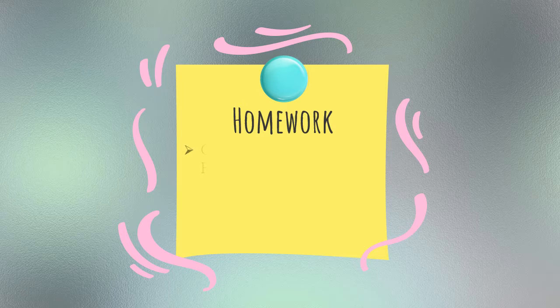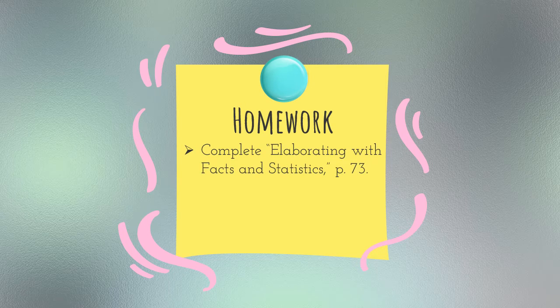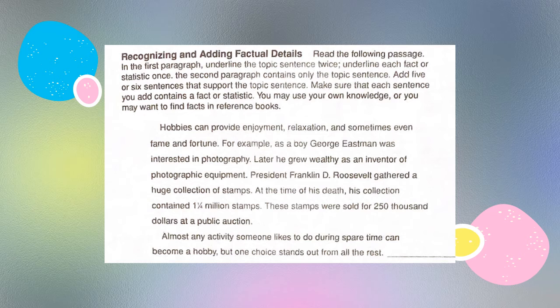For your homework, you are to complete elaborating with facts and statistics, page 73 in your writing book. It says: recognizing and adding factual details. Read the following passage. In the first paragraph, underline the topic sentence twice. Remember, your topic sentence is the main idea of your paragraph — not your whole piece or your whole paper, just that particular paragraph. Underline each fact or statistic once. The second paragraph contains only the topic sentence. Add five or six sentences that support the topic sentence, making sure that each sentence contains a fact or statistic. You may use your own knowledge or find facts in reference books.